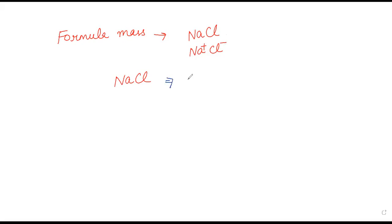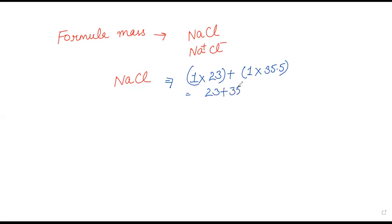Sodium chloride का formula mass: sodium की एक atom है, average mass 23 unified mass; chlorine की एक atom है, average atomic mass 35.5। So, 23 + 35.5 = 58.5 — इस तरीके से sodium chloride का formula mass calculate होगा। इस तरीके से आप लोगों का topic atomic mass, average atomic mass, molecular mass, और formula mass clear हुआ। Thank you for watching the video.